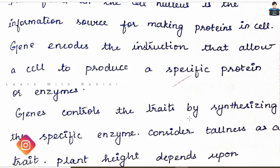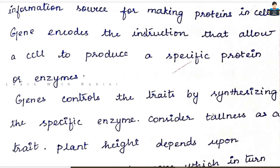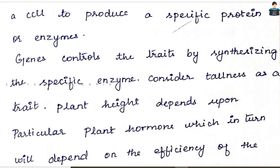Genes control the traits by synthesizing specific enzymes. So genes are what control the characters. How does it control? Through specific enzyme synthesis. That is the height of the character — tallness and dwarfness are the two types of plants. Plant height depends on a particular plant hormone.